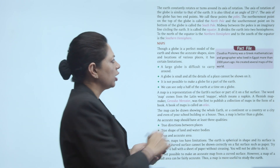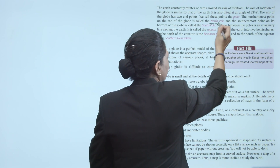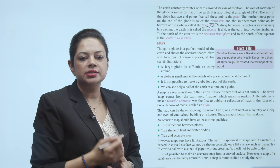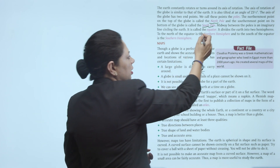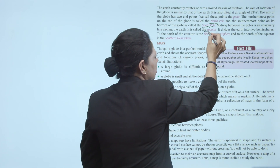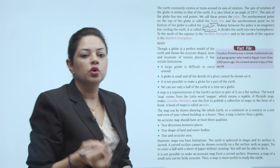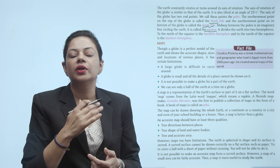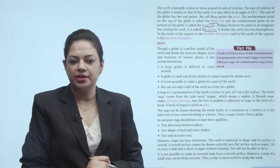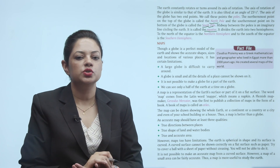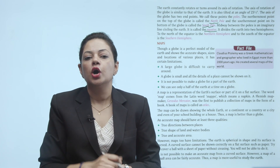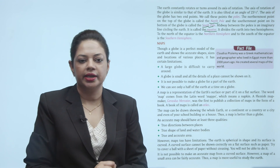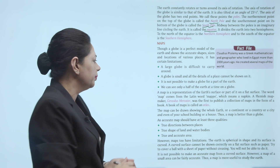Axis ke jo upar wala point hai usko North Pole kehte hain aur neeche wala South Pole kehte hain. Ek midway se ek line equator, jisko bolte hain, globe yaani ki Earth ko pass out karti hai — usko equator kehte hain. Earth ko do equal parts mein divide karti hai. North side ka jo part hai usko Northern Hemisphere kehte hain aur south side ka part hai usko Southern Hemisphere kehte hain.